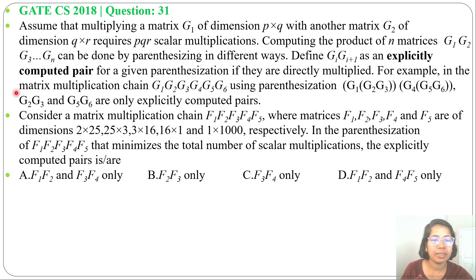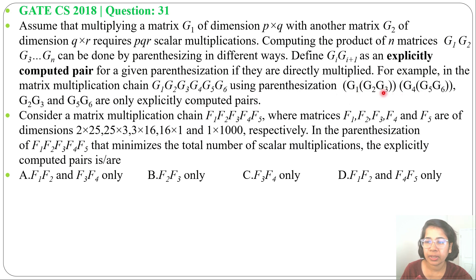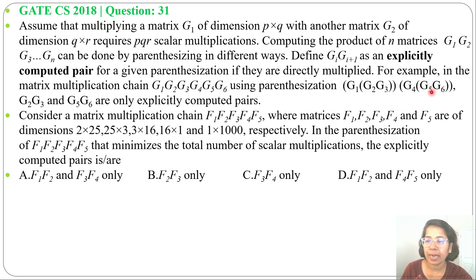For example, in the matrix multiplication chain G1, G2, G3, G4, G5, G6, using a parenthesization where we first multiply G2 and G3, then multiply that result with G1, then multiply G5 and G6 and that result with G4, then multiply the whole — here G2·G3 and G5·G6 are explicitly computed pairs.